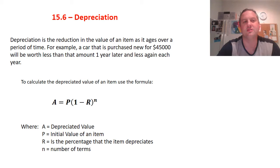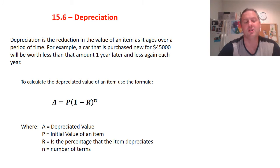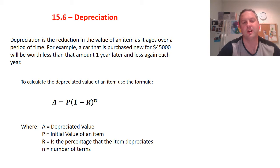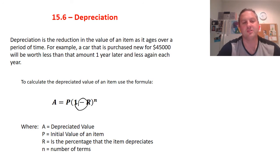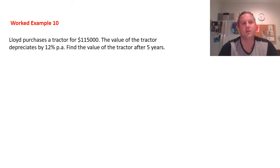Chapter 15.6: Depreciation. Depreciation is the reduction in the value of an item as it ages over a period of time. For example, a car purchased new for $45,000 will be worth less one year later, and less again each year. To calculate the depreciated value of an item, use the formula A = P(1 - r)^n. This is similar to compounding, but with a minus instead of a plus, so the value goes down. A is the depreciated value, P is the original value, r is the percentage rate, and n is the number of terms.